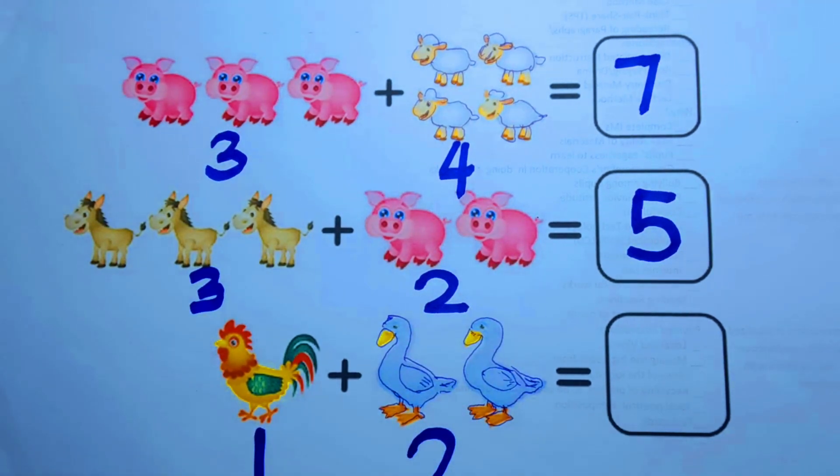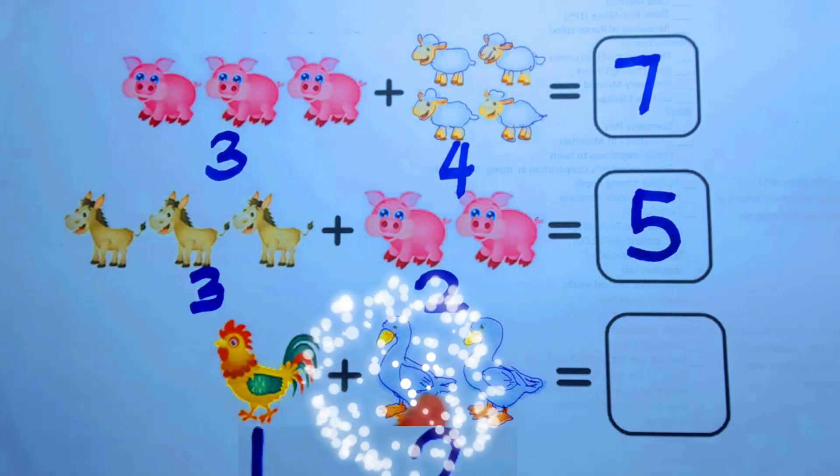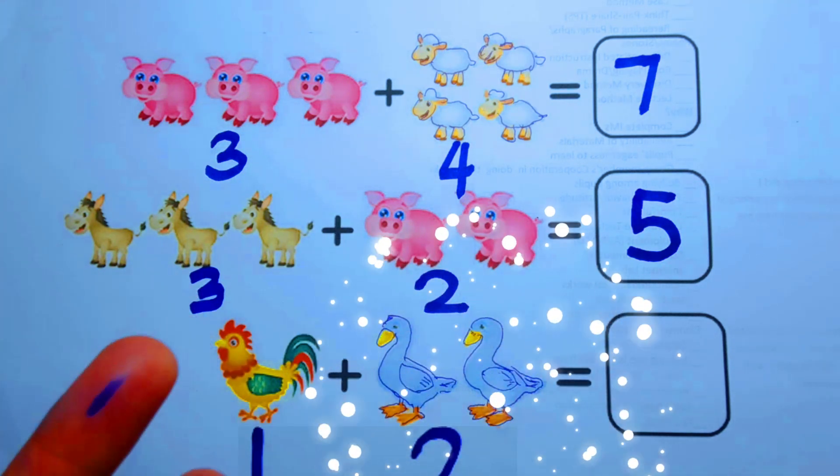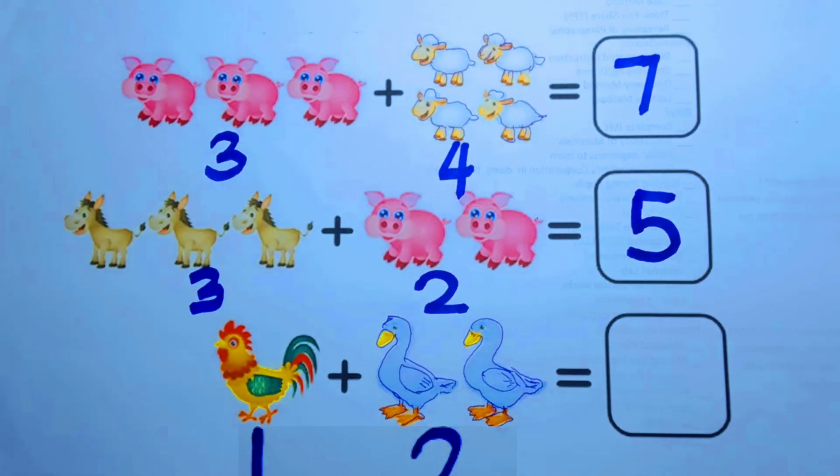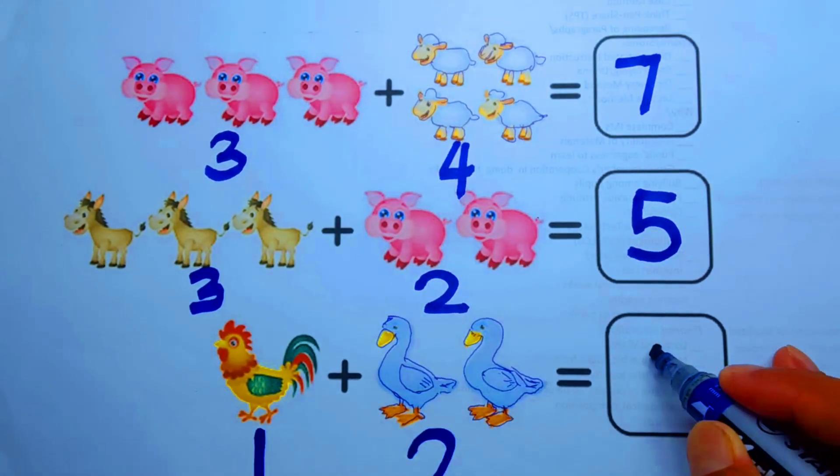Let's count them all. One, two, three. Fantastic counting. They are all three. It means that one plus two equals three. Number three is like this. Amazing!